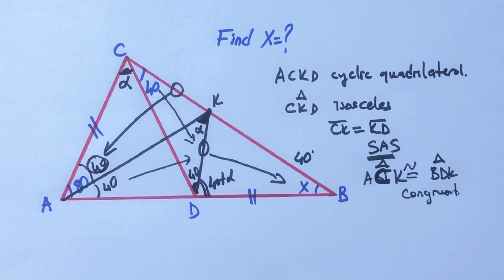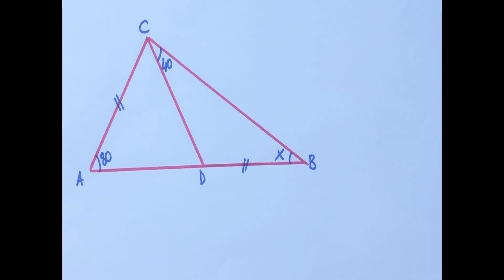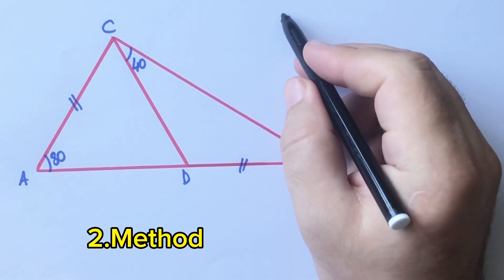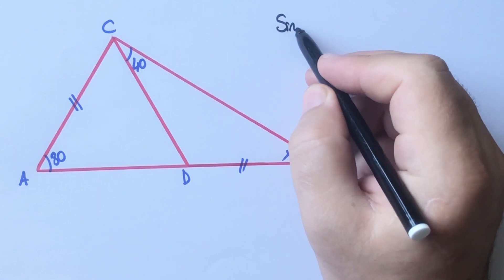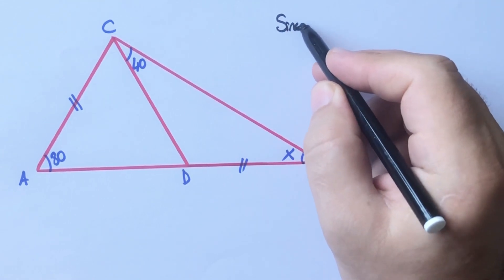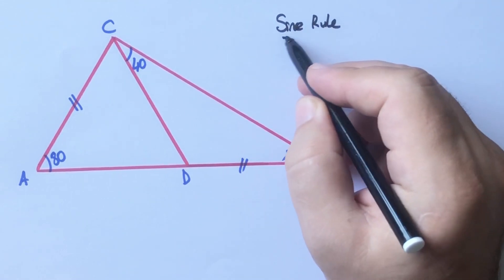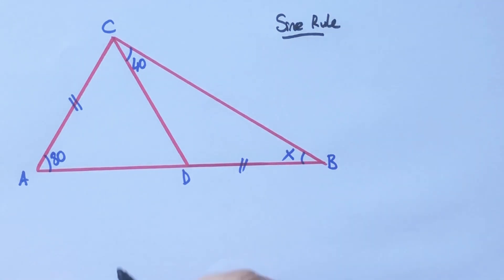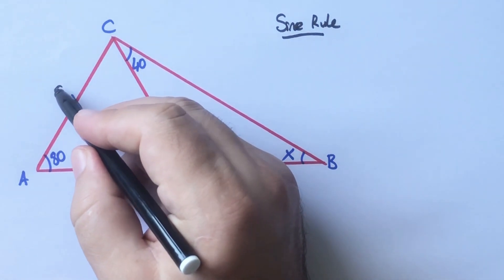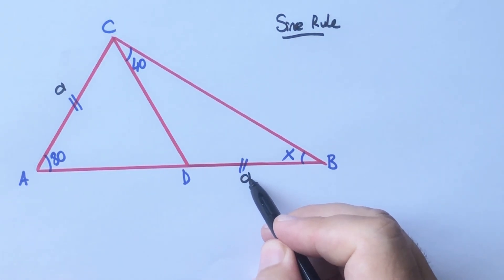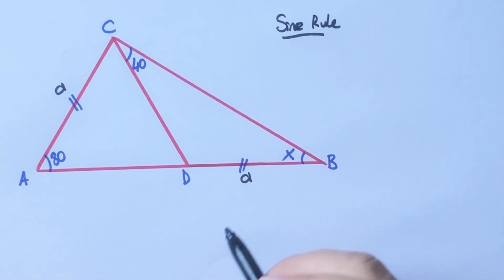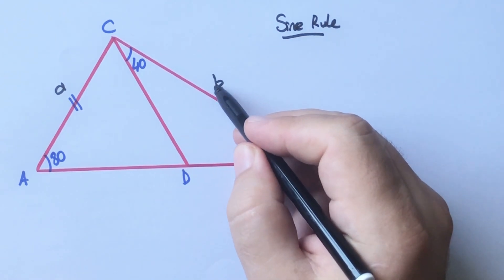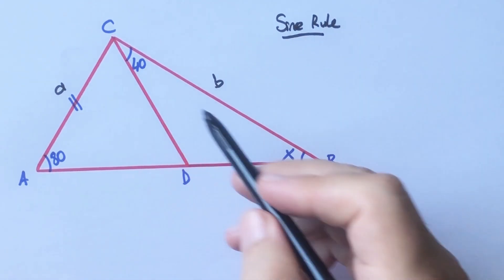Now we will calculate the value of x using the second method. For the second method we will use the sine rule. First of all, let's call the equal sides 'a' units, and this other length 'b'.